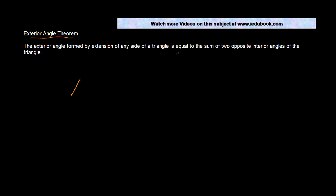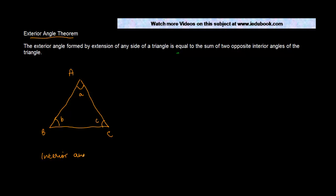Let's say you have a triangle. Let's call this as A, B, and C. So a triangle basically has three angles. Let's call them small a, small b, and small c. These three angles are known as the interior angles of a triangle.